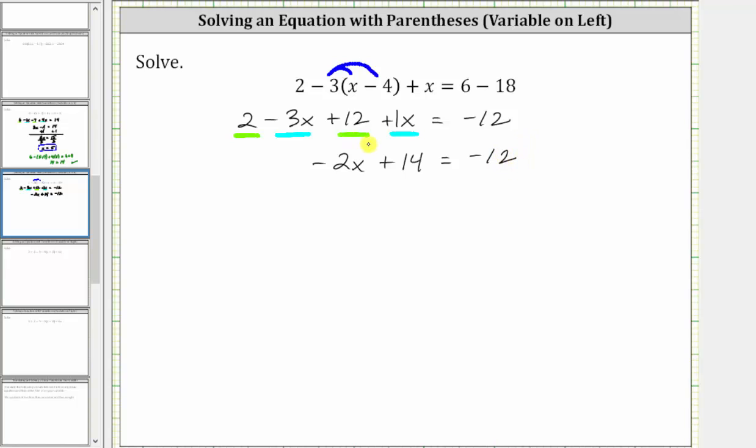The next step is to isolate the variable term of negative two x. To undo the plus 14, we subtract 14 on both sides of the equation. Simplifying, 14 minus 14 is zero. The left side simplifies to negative two x, which is equal to negative 12 minus 14, which is negative 26.